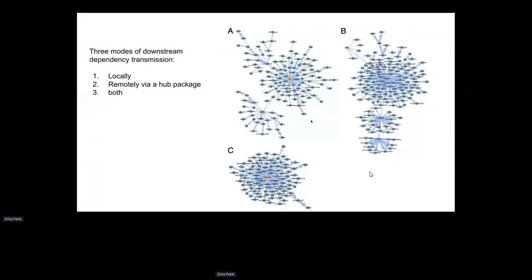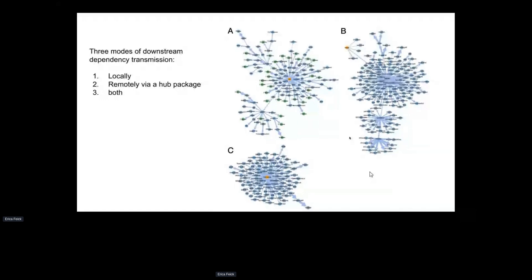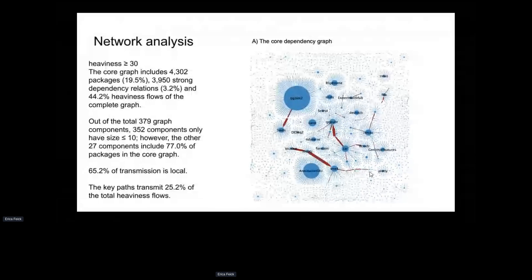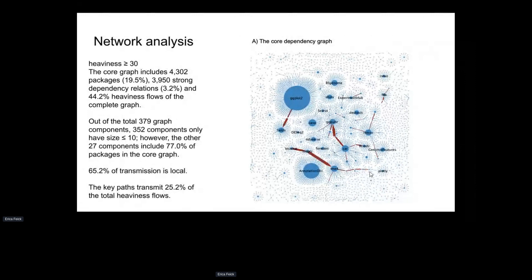There are three types of heaviness transmission: first, locally — for example tidyverse affects many direct child packages; second, remote via a hub package — a package with few direct children but transmitting dependencies to many downstream packages via a hub child such as ggpubr; and third, both locally and remotely — for example carve, which has many direct child packages and also many remote downstream packages. A core dependency graph was constructed taking parent-child pairs with very high heaviness values.